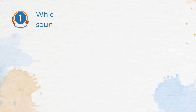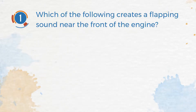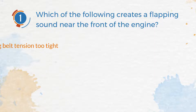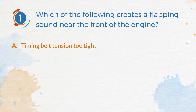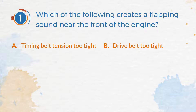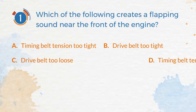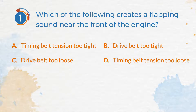Number 1. Which of the following creates a flapping sound near the front of the engine? A. Timing belt tension too tight. B. Drive belt too tight. C. Drive belt too loose. D. Timing belt tension too loose.